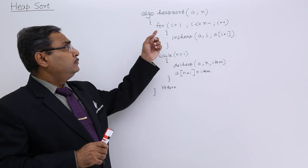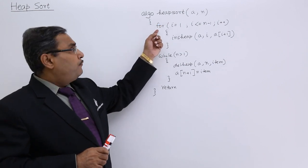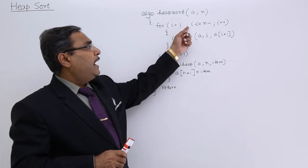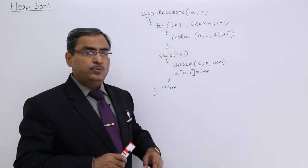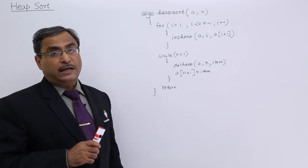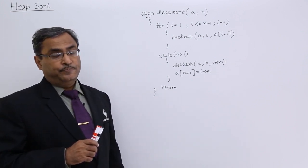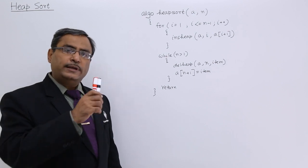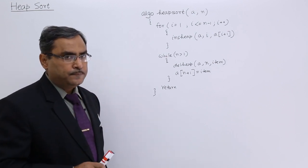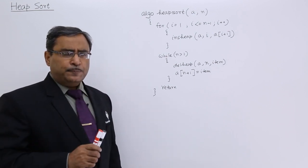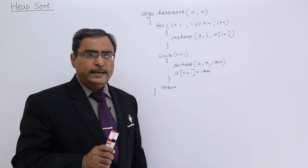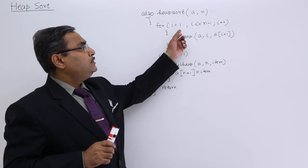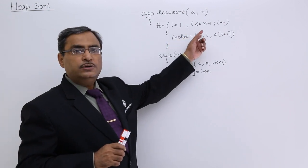Now, the loop: for i equal to 1, i less than or equal to n minus 1, i plus plus. So i is going to increase from 1 to n minus 1. Let us suppose the value of n is equal to 10. So this particular i will be ranging from 1 to 9.